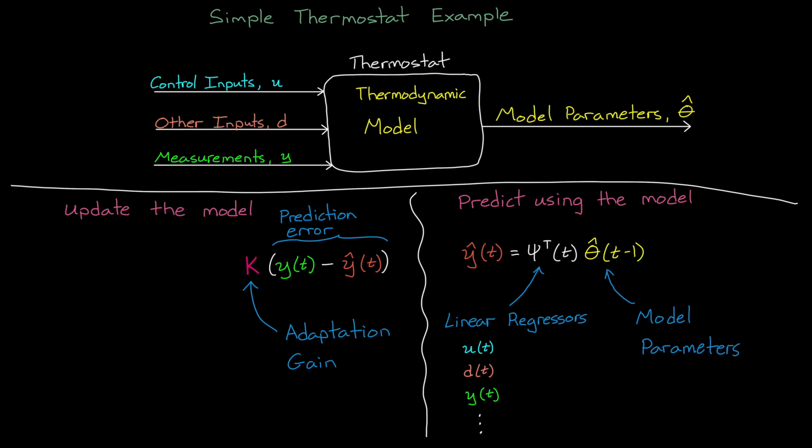An online algorithm would adjust the model parameters in some way to reduce that error. One way is simply to use a gradient method, where an adaptation gain k scales the error, and then adds it to the old parameters to get a new set of estimated parameters.